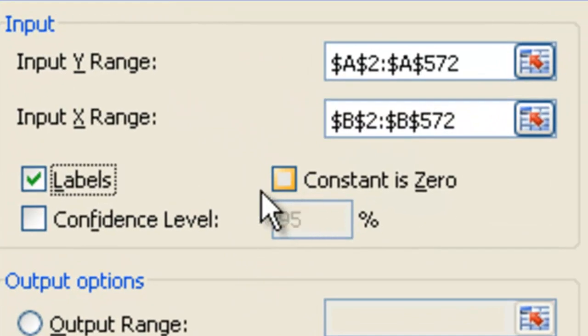Now I want an intercept in my regression. I want to estimate that alpha zero from that equation. So I'm not going to check this box. If you check constant is zero, then that would be estimating regression without the intercept.